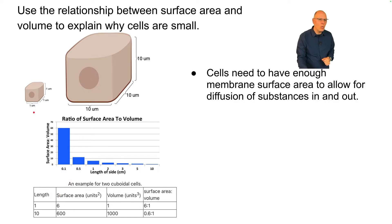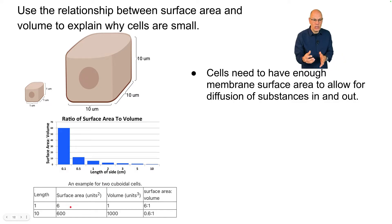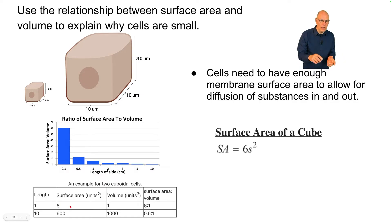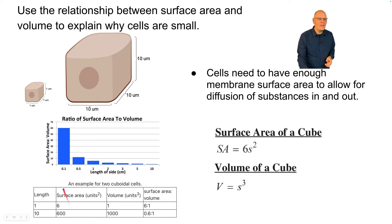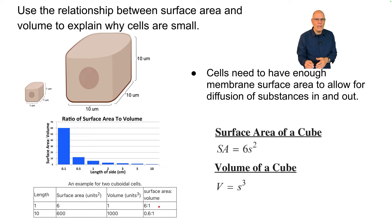Now let's look at the math. If you have a cell that's one micrometer — one micron on the side — then its surface area, if it's cubic, would be one times one times six. Think of the formula for surface area for a cube. Its volume is one times one times one, and therefore its surface area to volume ratio is six to one — six units of surface area to every one unit of volume.